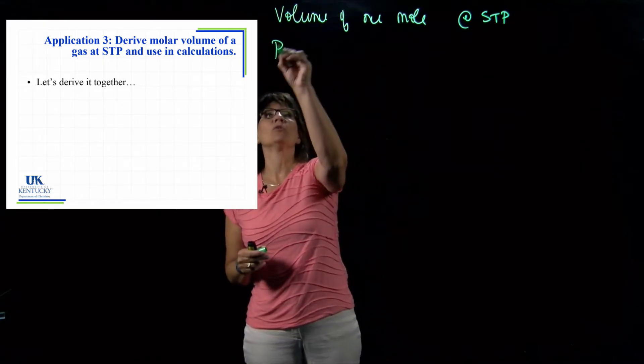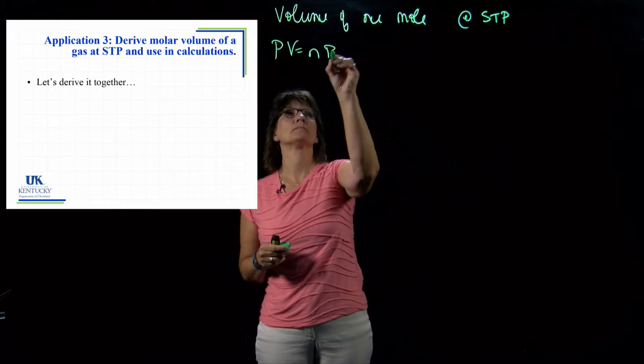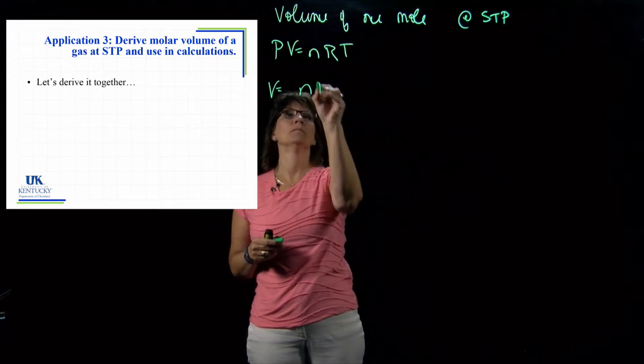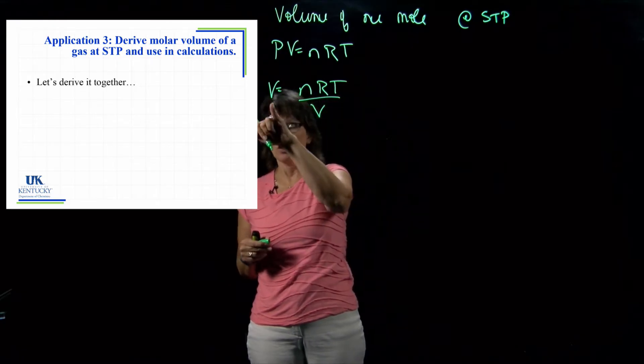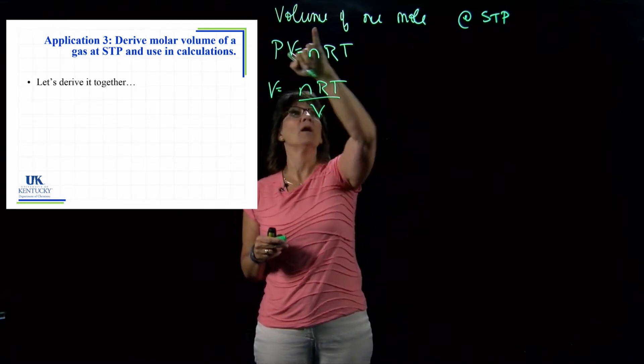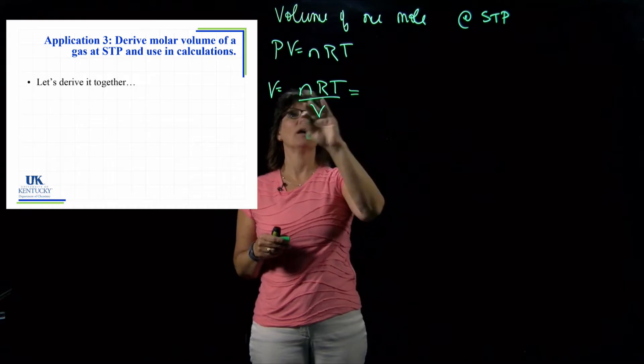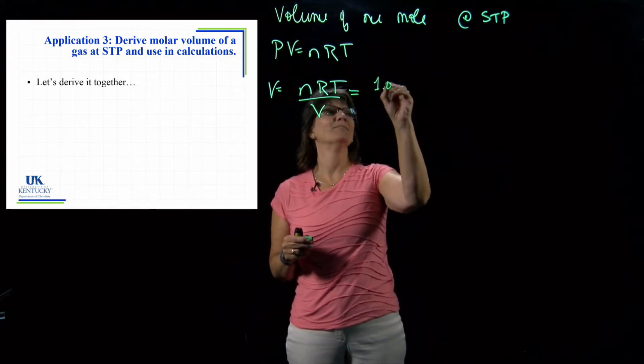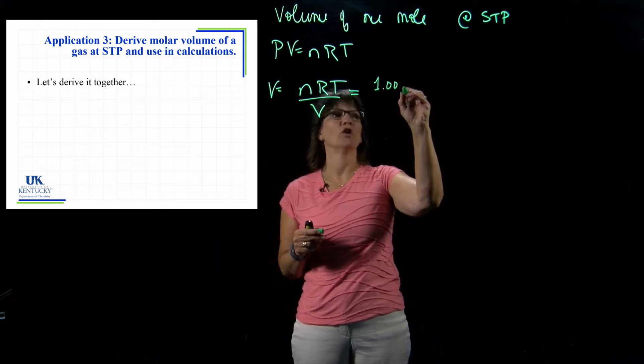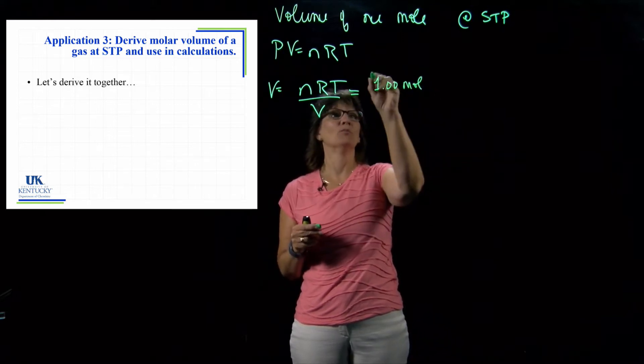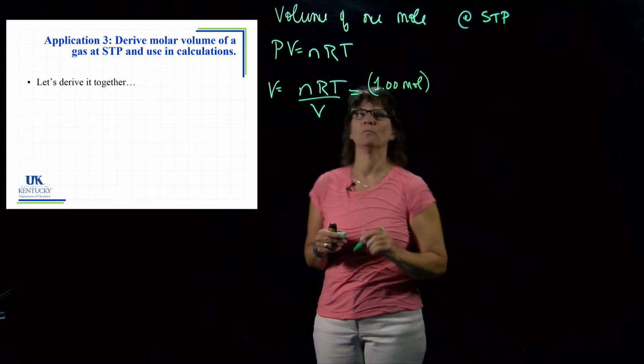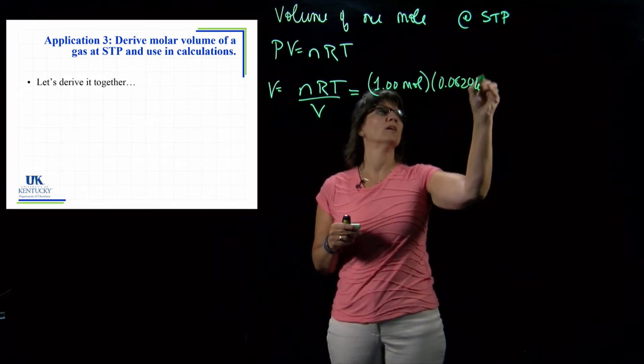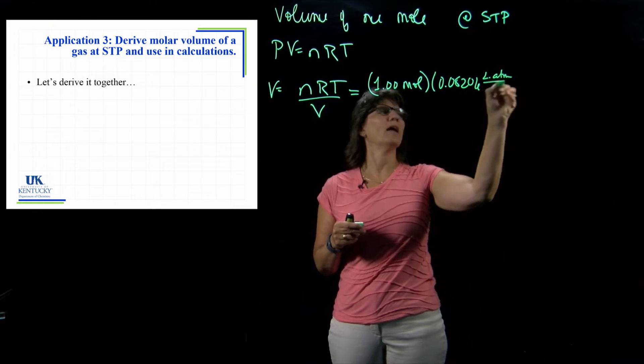We want to use PV equals nRT to do this, and we want to solve for volume because we want to know the volume of one mole. So we can start plugging in what we know. We know the number of moles is one because by definition that's what molar volume is. R is 0.08206 liter atmospheres.